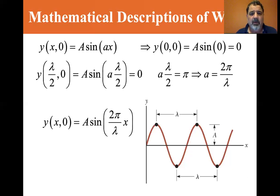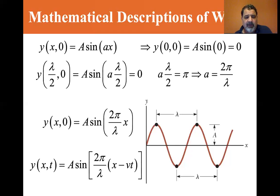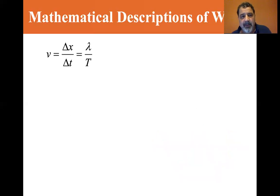So that becomes our constant a. Y of x comma zero is equal to A sine, where A is the amplitude, sine two pi over lambda times x. And when it's traveling, y of x sub t, all those were at the zero point. Y of x sub t is equal to A sine two pi over lambda times x minus vt. If it were going in the opposite direction, it would be x plus vt.